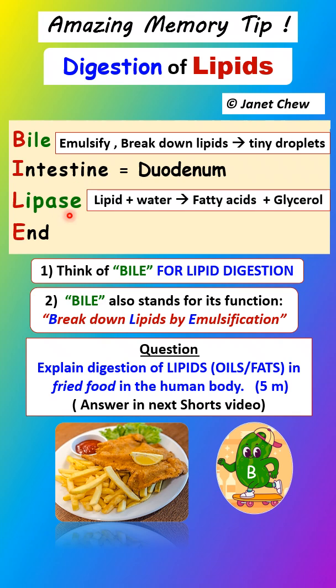There is only one enzyme for lipids that we study, and it is called lipase. Lipase is produced by the pancreas and secreted in the pancreatic juice into the duodenum, where it breaks down lipids into the final products: fatty acids and glycerol, which are then absorbed in the small intestine. Apart from pancreatic juice, the ileum also produces intestinal juice that contains lipase, completing the digestion of lipids.